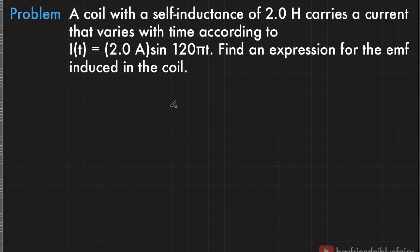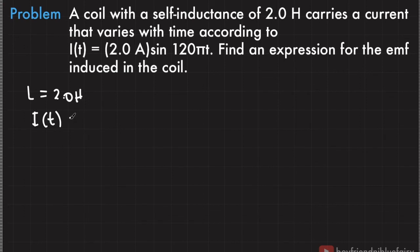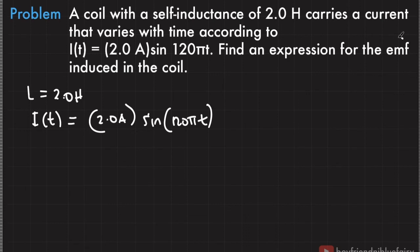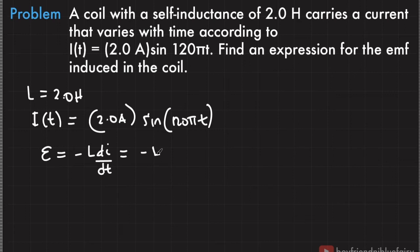Let's use the concept of self-inductance to solve a problem. This problem is from Openstax University Physics, Chapter 14 — Inductance, Problem 39. A coil with a self-inductance of 2.0 Henrys carries a current that varies with time according to i(t) = 2.0 A · sin(120π·t). Find an expression for the EMF induced in the coil. To find the induced EMF, we use the expression we derived earlier: E = −L·di/dt, and plug in the expression for current.